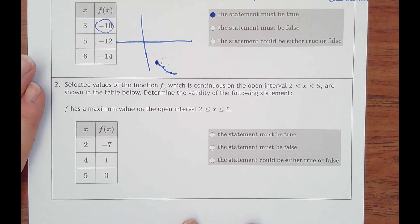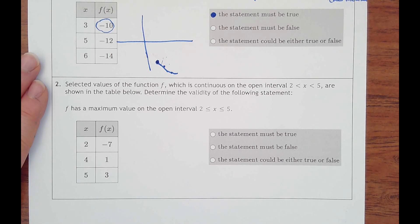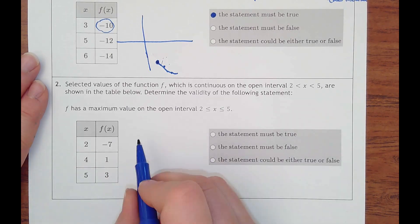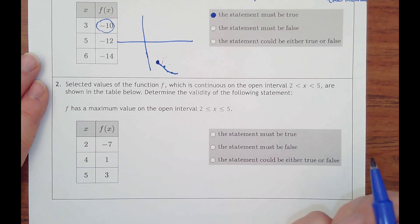And then number 2. Selected values of the function f, which is continuous on the open interval 2 to 5, are shown in the table below. Determine the validity of the following statement: f has a maximum value on the open interval from 2 to 5.